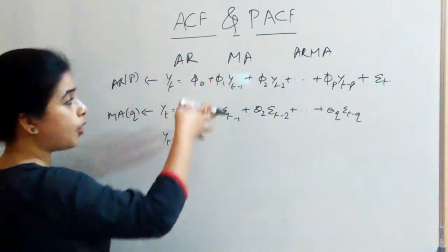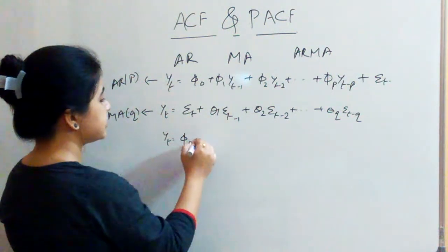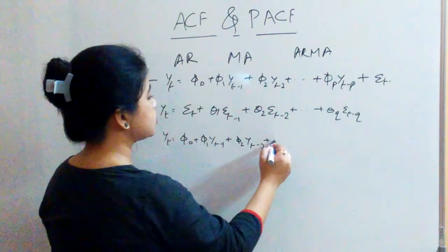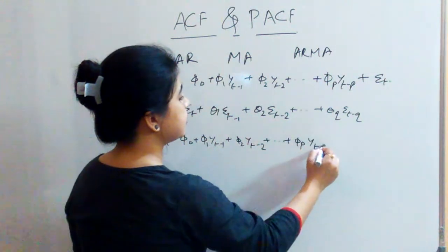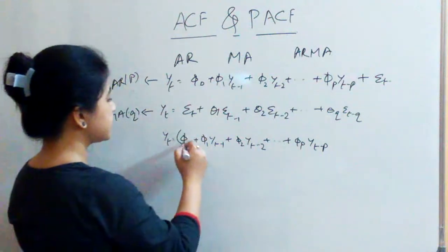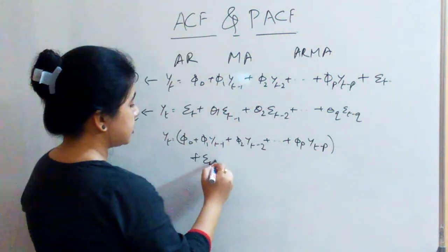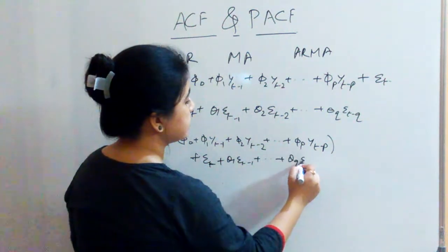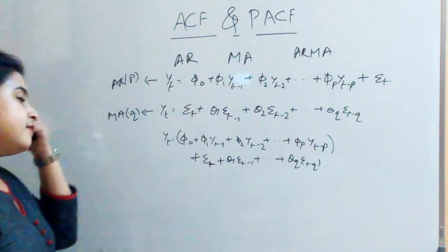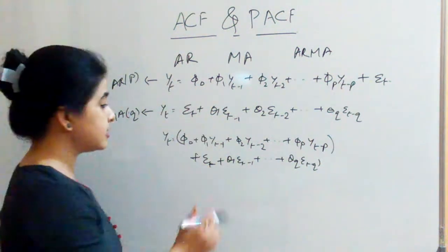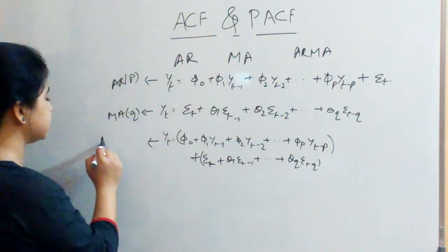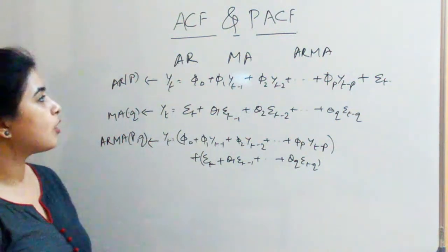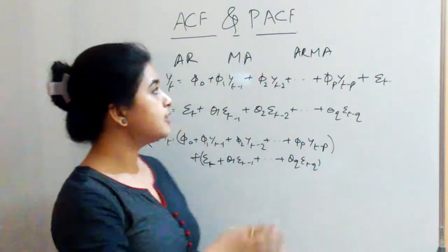And when we have a combination of these two, that is phi-naught plus phi-1 yt-minus-1 plus phi-2 yt-minus-2 and up to phi-p yt-minus-p, plus the summation of epsilon-t plus theta-1 yt-minus-1 up to t-minus-q, then this forms an ARMA model of order p comma q. So these are the basic formats of AR, MA, and ARMA.